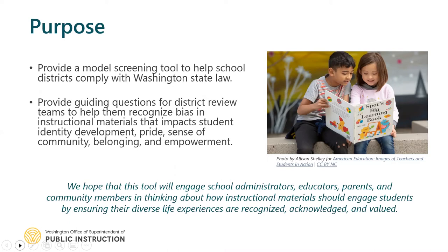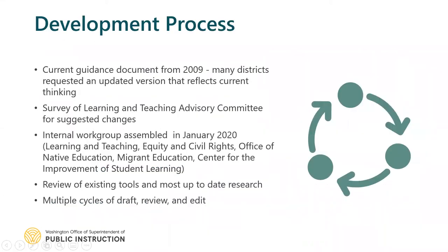Next, we're going to look at how this document was created and the development process. We originally created the first iteration of this document in 2009. Over the past decade, we've heard from many people who asked for this document to be updated. We started with our learning and teaching department looking at what could be changed, and then we brought in all of our agency partners, such as our Equity and Civil Rights Office, our Office of Native Ed, our Migrant Office, and our Center for Improvement of Student Learning.